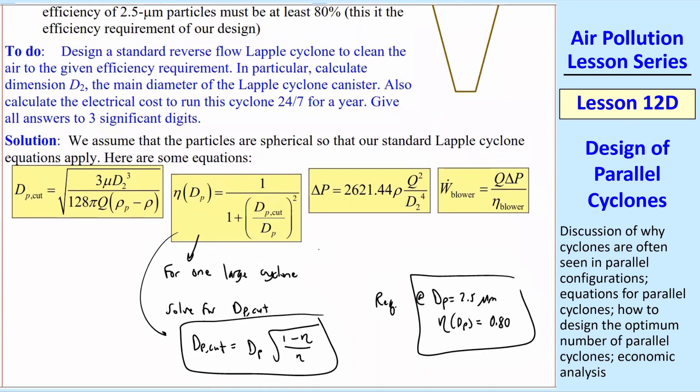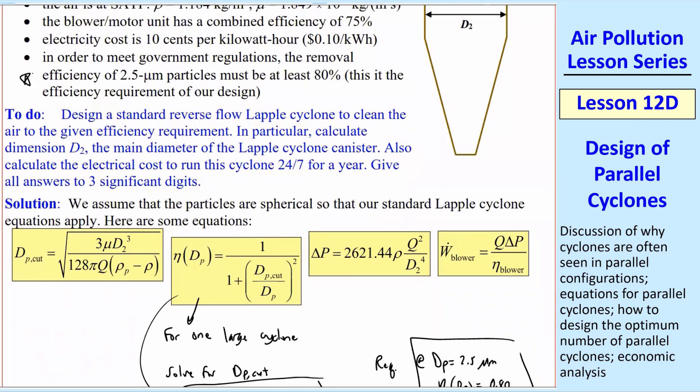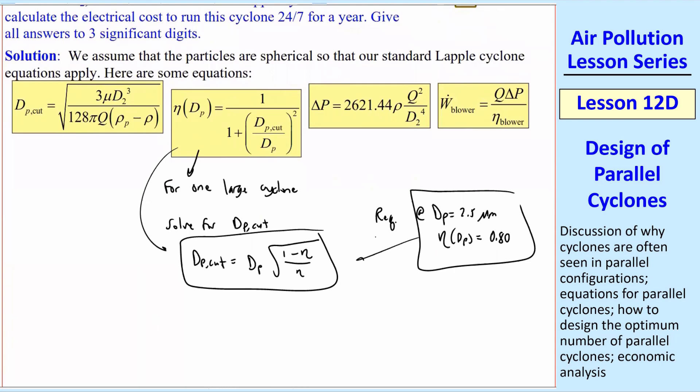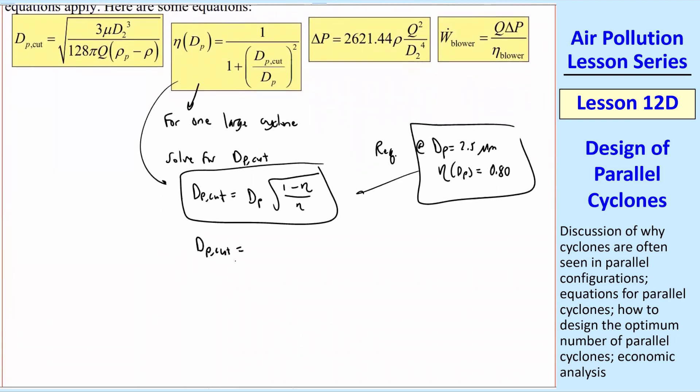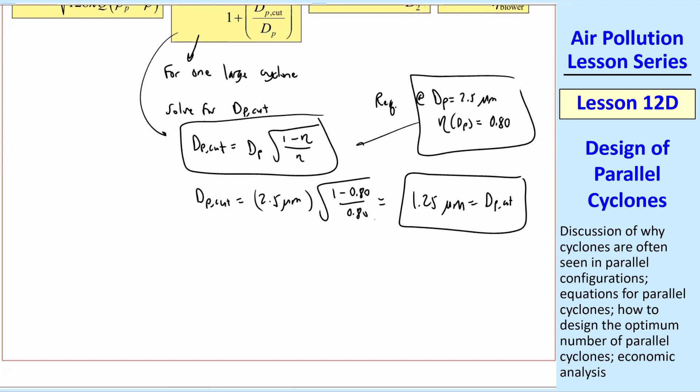That's our requirement from given information here, in order to meet these regulations. 2.5 micron particles, 80% removal efficiency. So that's what we're going to plug into here. We get dpcut equal - I'll put in my 2.5 microns as my dp, and then square root of 1 minus 0.80 over 0.80. And that turns out to be 1.25 micron is dpcut. I didn't ask for dpcut, but that's the dpcut that's required to meet the regulations. So however we do this, whether with one cyclone or many cyclones, we're going to have to have that dpcut.